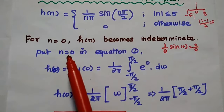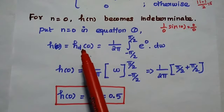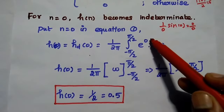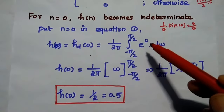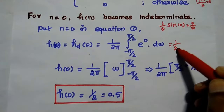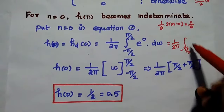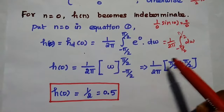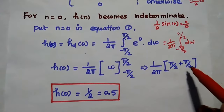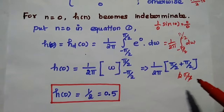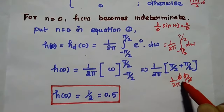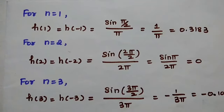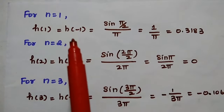Substituting n = 0 in the first equation: h(0) = (1/2π) × [ω] from -π/2 to +π/2 = (1/2π) × (π/2 + π/2) = (1/2π) × π = 1/2 = 0.5. Next we find values for n = 1, 2, 3, 4, and 5.